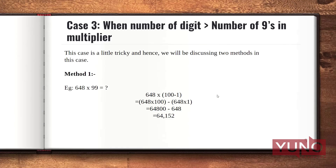Let's discuss Case 3. In this case the number of digits in the multiplicand is greater than the number of 9s in the multiplier. We will be discussing two methods because this is a little tricky one. Method 1: for example, 648 multiplied with 99. Here 3 digits is more than 2 nines, so Case 3 applies. We can write 99 as 100 minus 1, so we compute 648 × 100 minus 648 × 1. Computing this we get 64,152. This is Method 1.